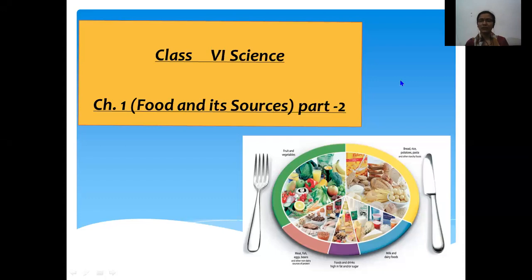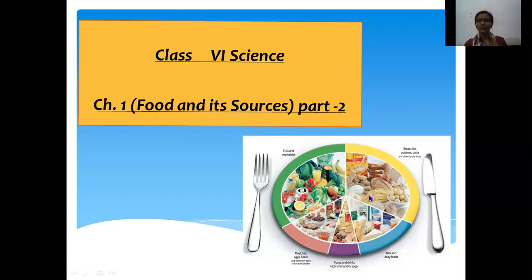Hello students. Now we are going to start the second part of the chapter on food and its sources. In the first part we discussed about food, variety of foods, and the sources of food. As you know, there are two sources of food: the plant sources and the animal sources. In the previous part we also discussed about the ingredients and the nutrients.